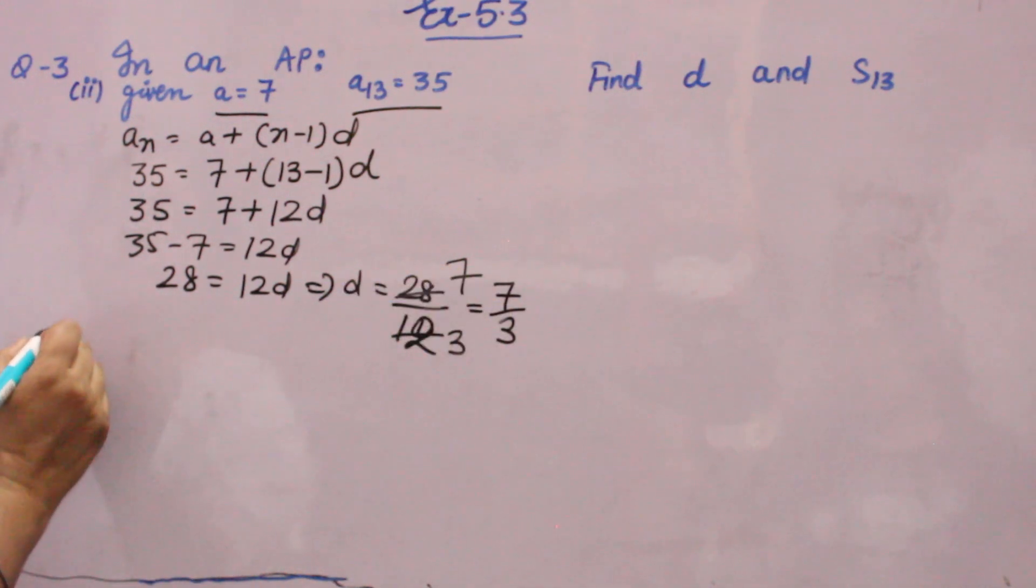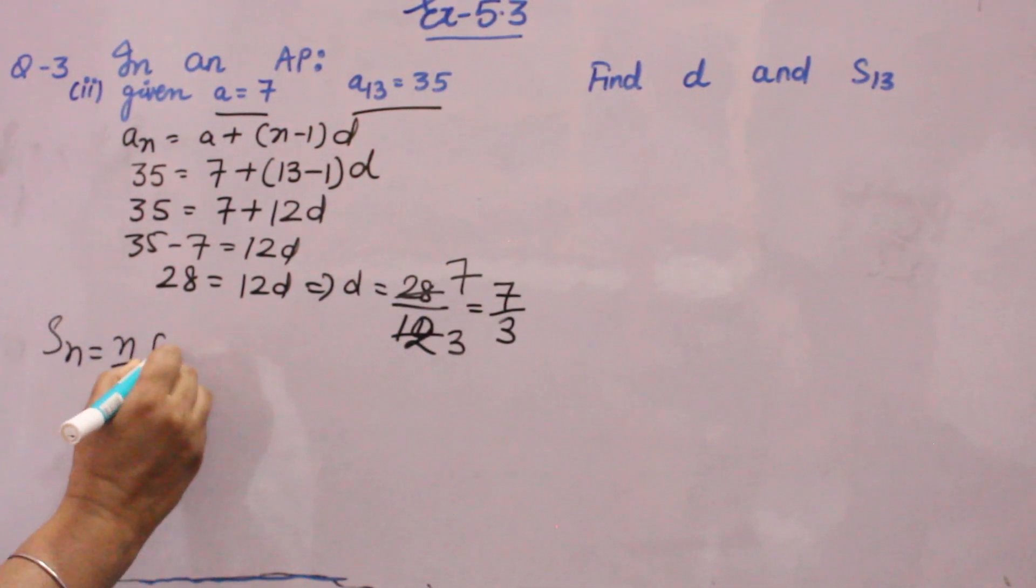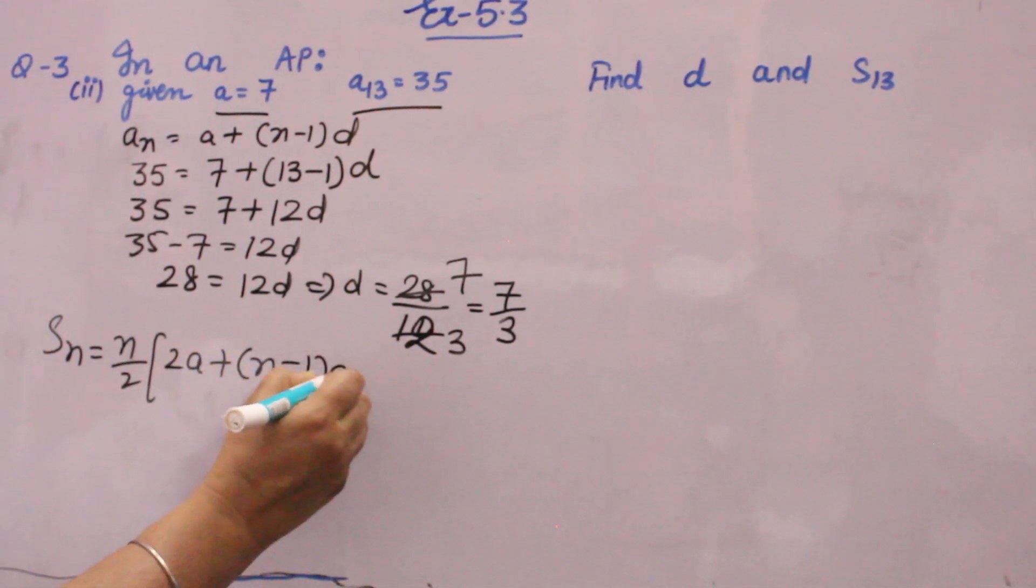Now you have to find S₁₃. Sₙ formula is: Sₙ is equal to N by 2, 2A plus (N minus 1) into D.